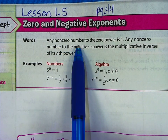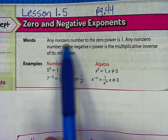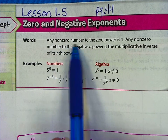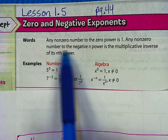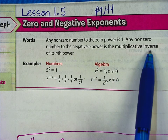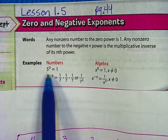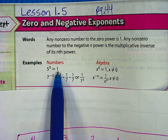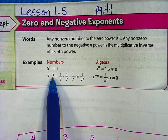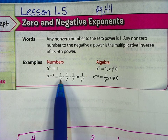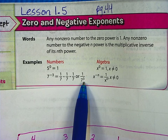Any non-zero number to the zero power is 1 — any number other than zero has a value of 1. And any non-zero number to the negative n power is the multiplicative inverse of its n-th power. For example, 5 to the zero power equals 1, and 7 to the negative third power is the same as 1/7 times 1/7 times 1/7, or 1 over 7 cubed.